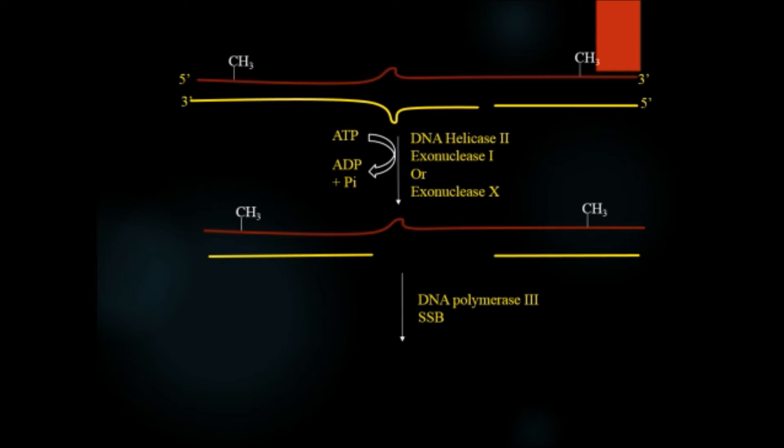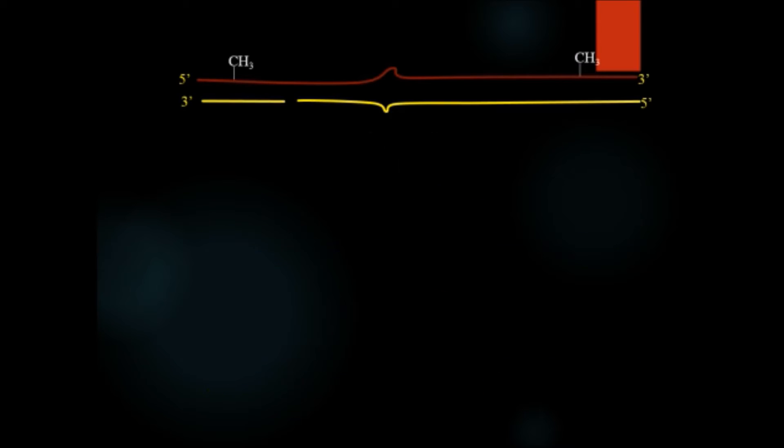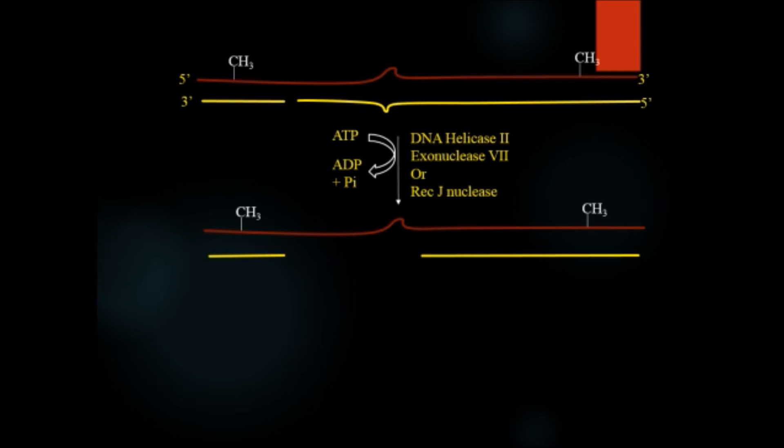Then with the help of DNA polymerase 3 and SSB protein, the whole DNA sequence will be repaired. But if the lesion is on the 3' side, then with the help of ATP, DNA helicase 2, exonuclease 7, or RecJ nuclease will cut out the lesion and again with the help of DNA polymerase 3 and SSB protein, it will repair the DNA strand.